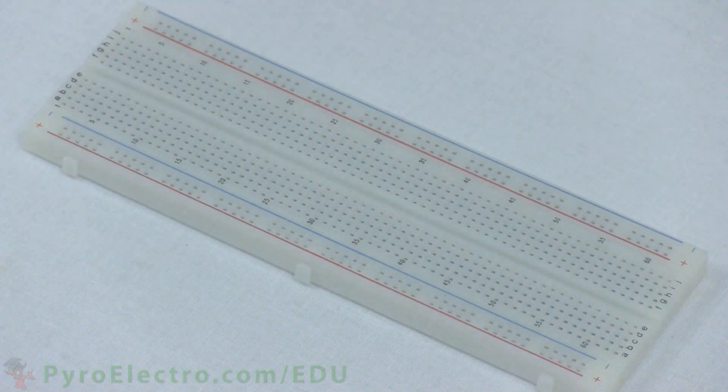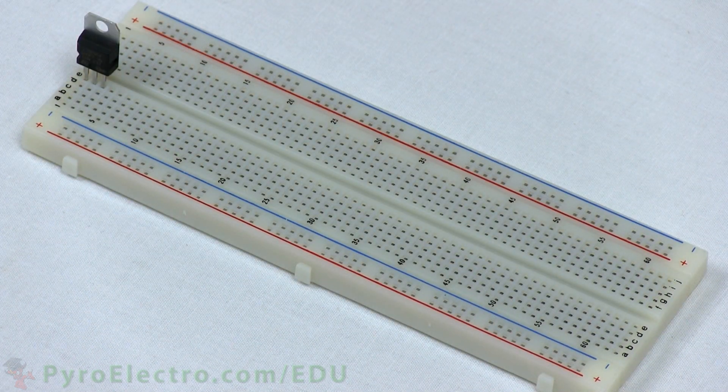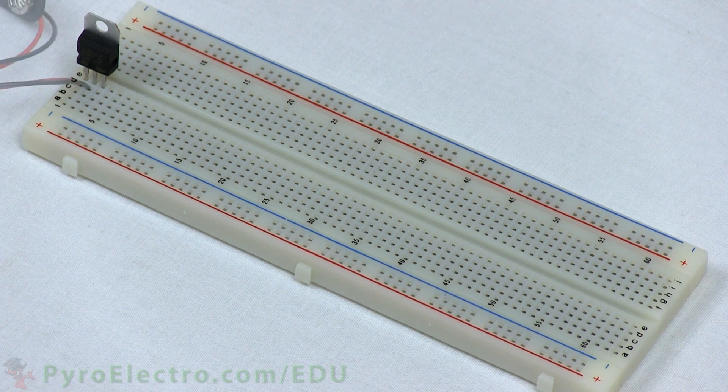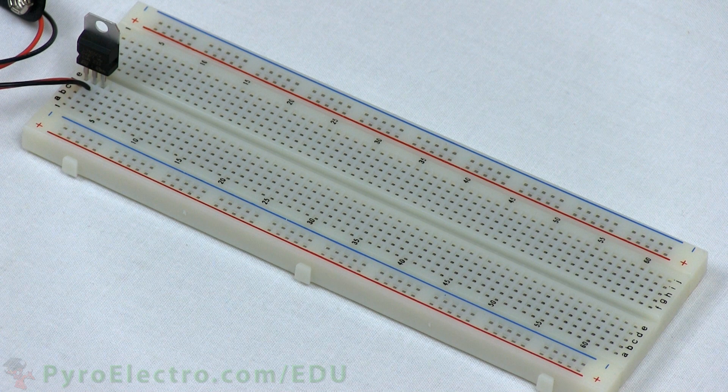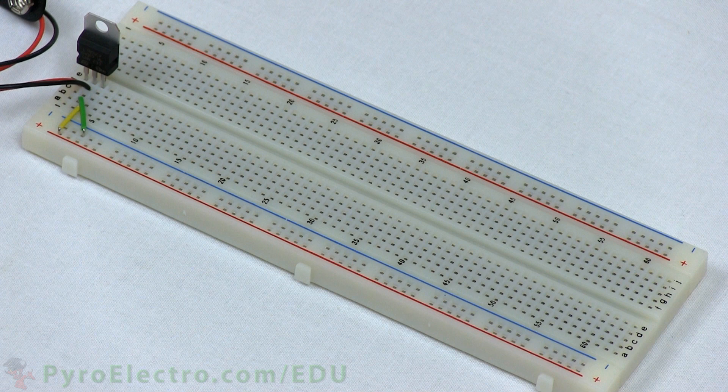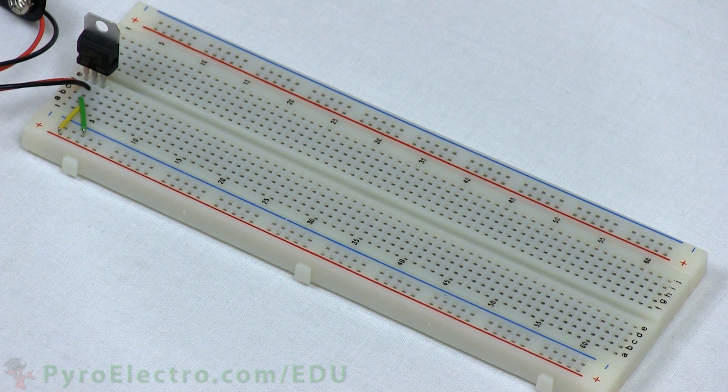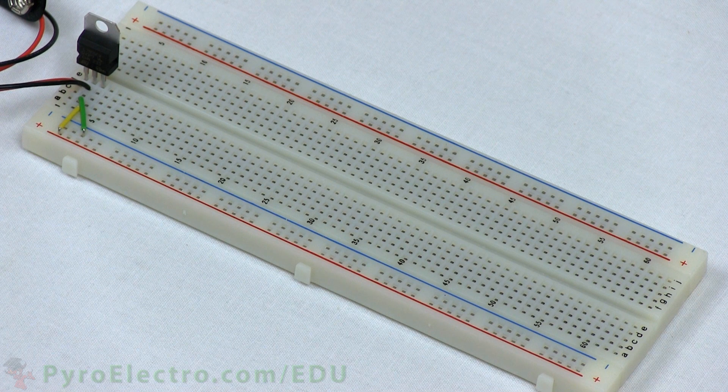First, we'll connect the 7805 5-volt regulator into the breadboard. The 9-volt connector's red wire connects to the input at pin 1, and the black wire connects to the ground at pin 2. Next, we connect the 7805's pin 3 to the red power bus on the breadboard with a yellow wire, and then connect pin 2 to the ground bus with a green wire.